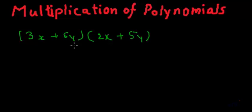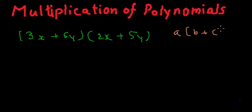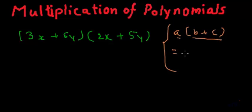These two binomials are to be multiplied. At this point let us revise one more thing, which is the distributive property of multiplication over addition. I think we have talked about this earlier — we learned this identity in third standard.